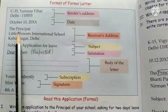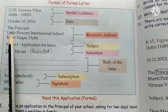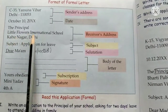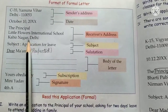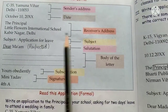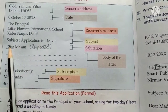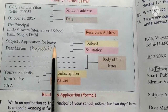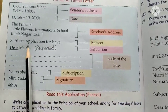Next comes the receiver's address — the person to whom we are writing the letter. For example, if we are writing to the principal, the principal is the receiver. We write: 'The Principal,' the name of the school, and the area where the school is located — all forming part of the receiver's address.